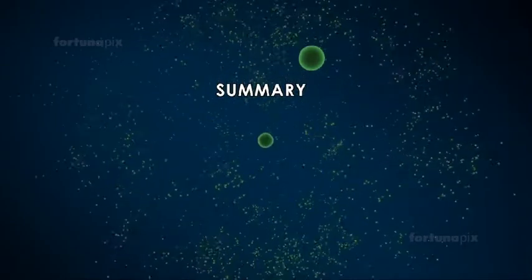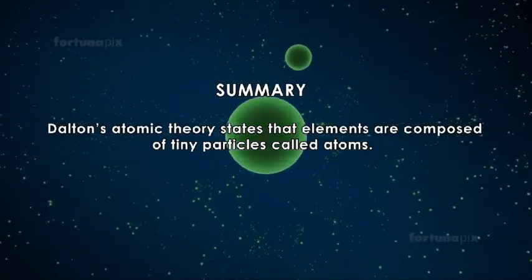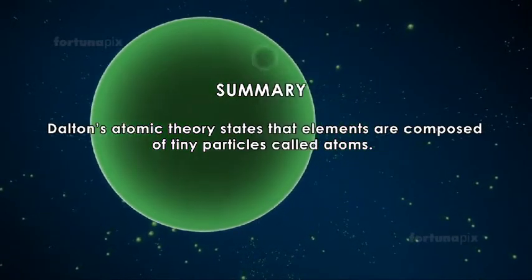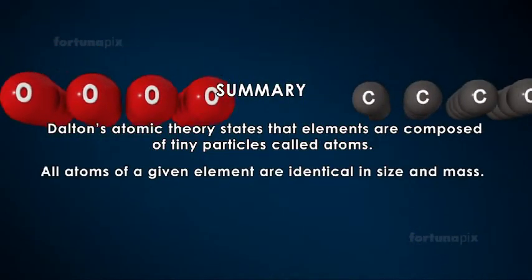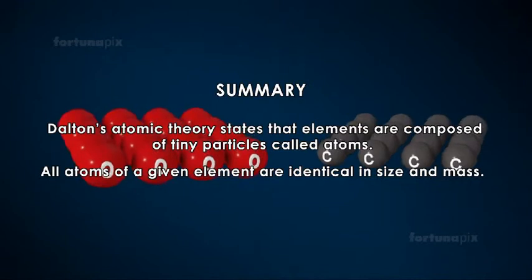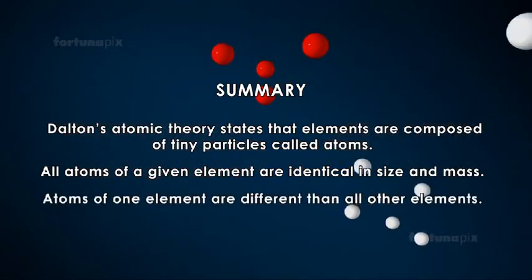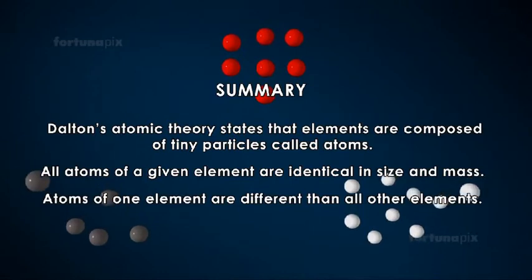Summary: Dalton's Atomic Theory states that elements are composed of tiny particles called atoms. All atoms of a given element are identical in size and mass. Atoms of one element are different than all other elements.